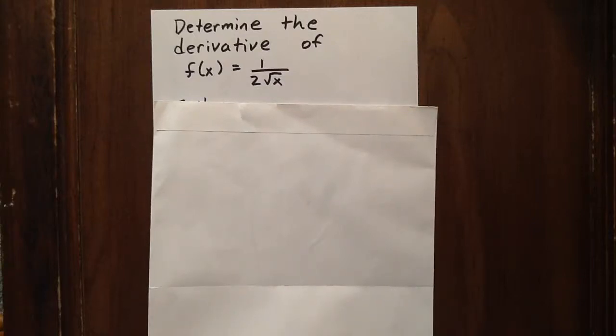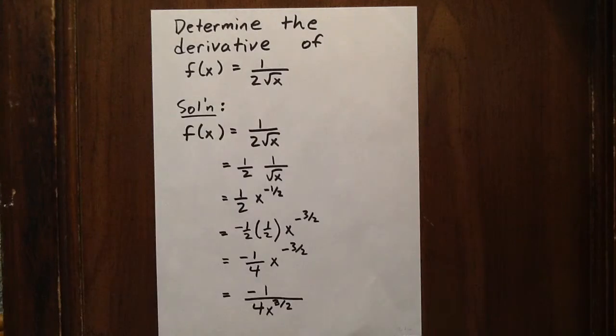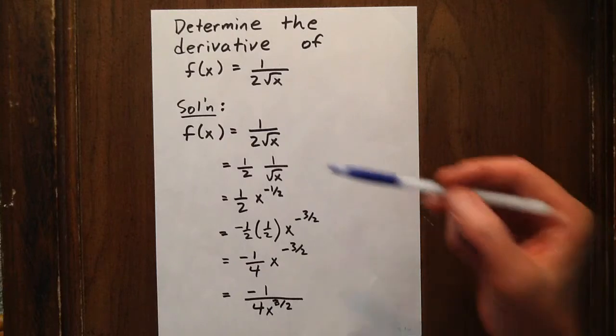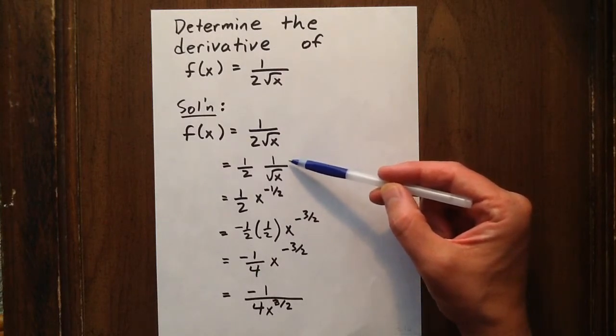In this question we want to determine the derivative of f of x equals 1 over 2 root x. To use the power rule, we should re-express 1 over 2 root x in a form that would allow us to use the power rule.